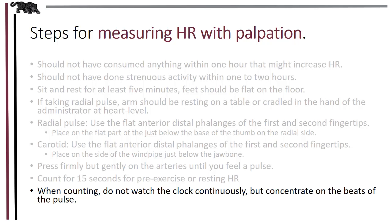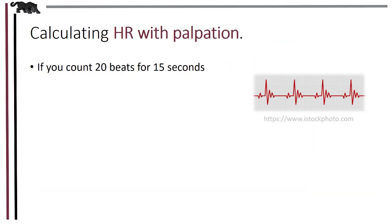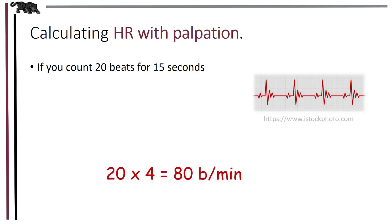Now we have to calculate beats per minute. If you counted 20 beats for 15 seconds — there are four 15-second periods in one minute, so 15 seconds is a quarter of a minute — multiply by four. So 20 beats times 4 equals 80 beats per minute.